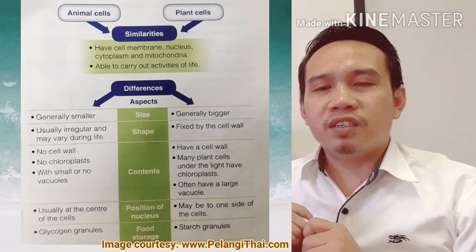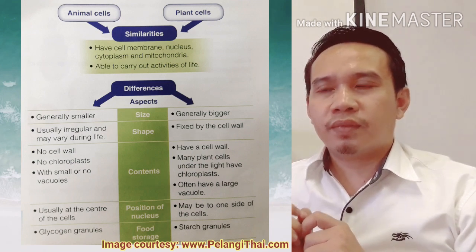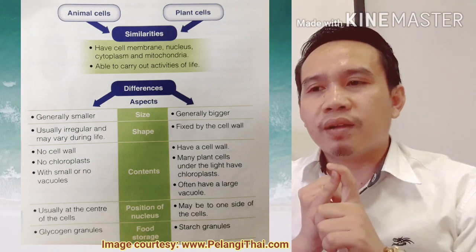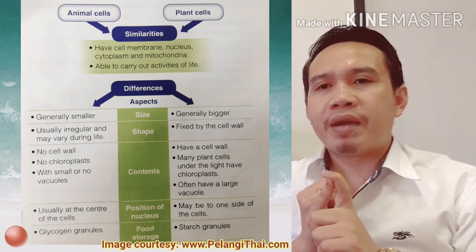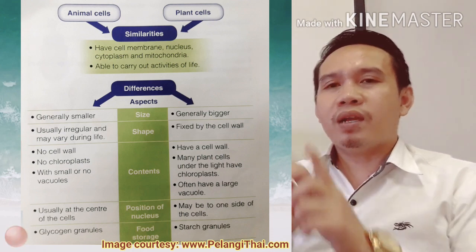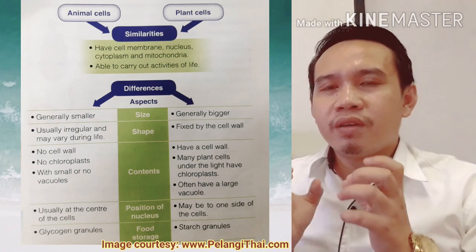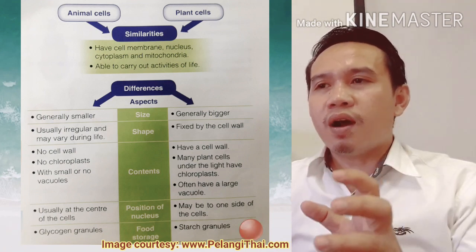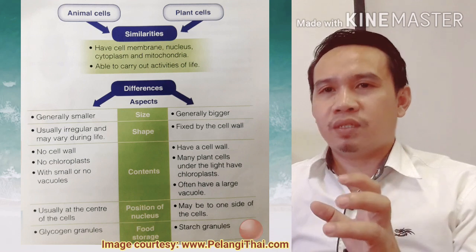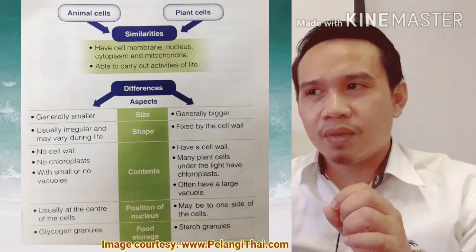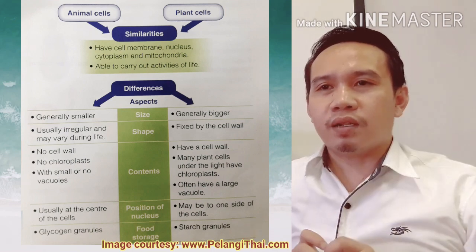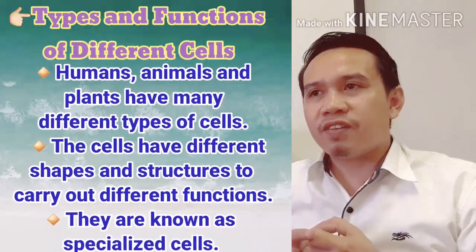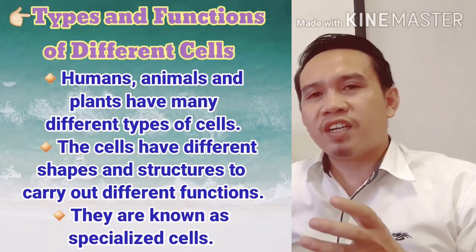Regarding food storage, in animal cells there are glycogen granules, while in plant cells there are starch granules. Those are the common differences between animal and plant cells. Finally, we will talk about the different types and functions of specialized cells.